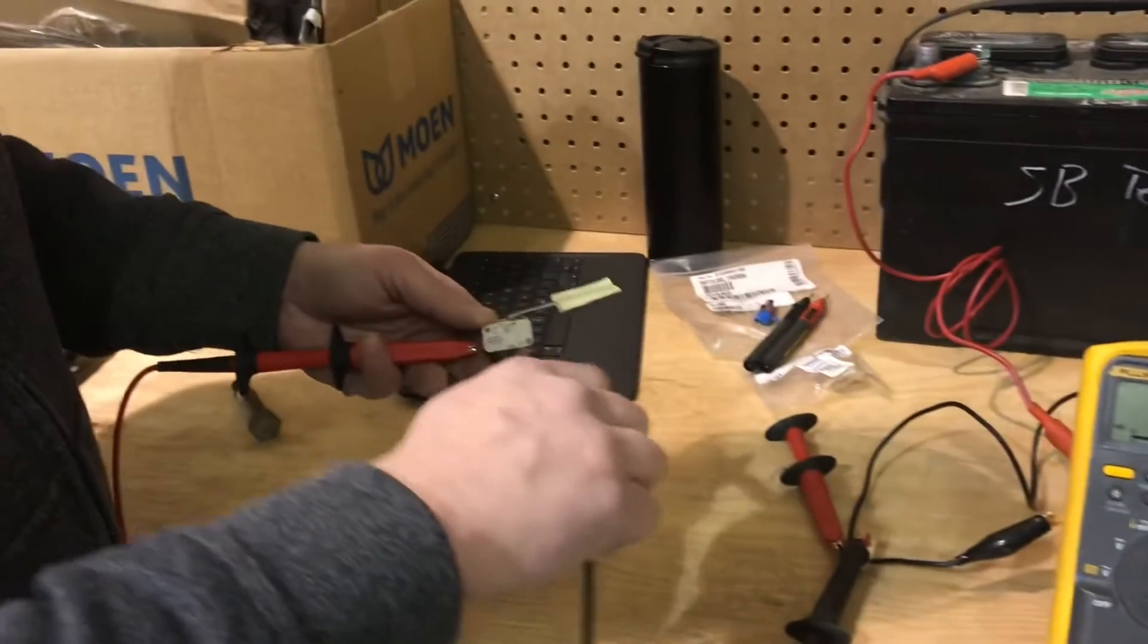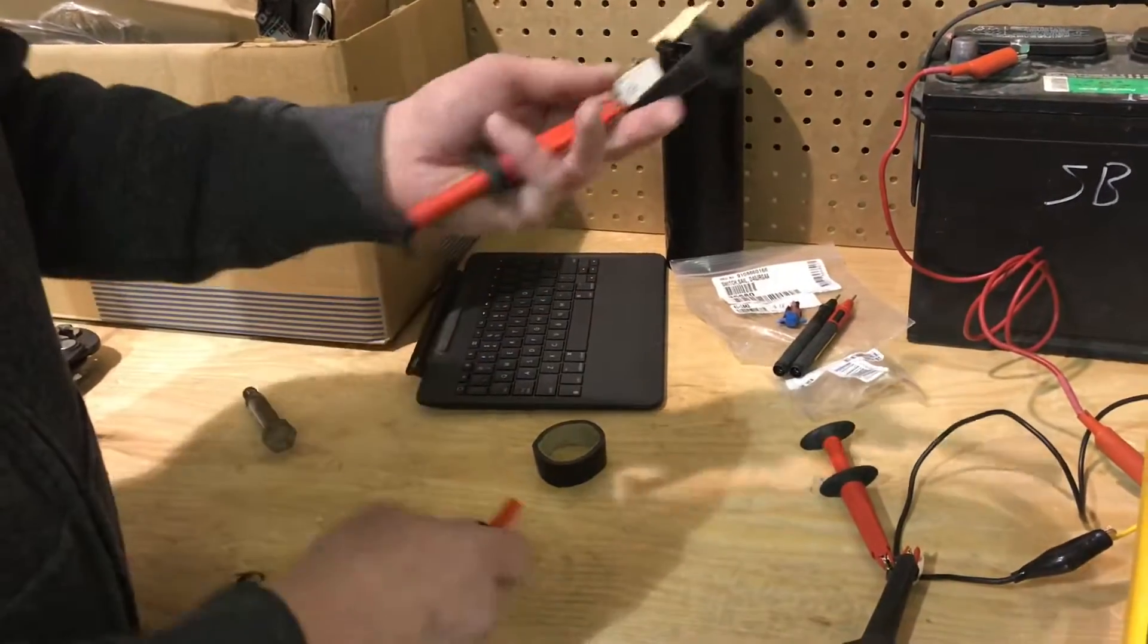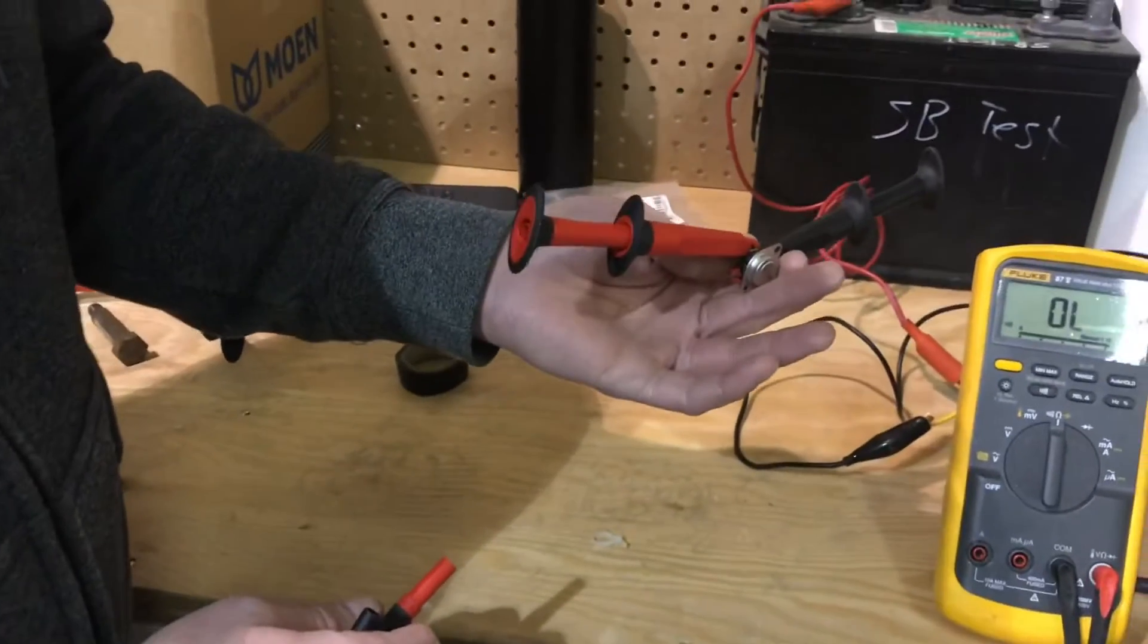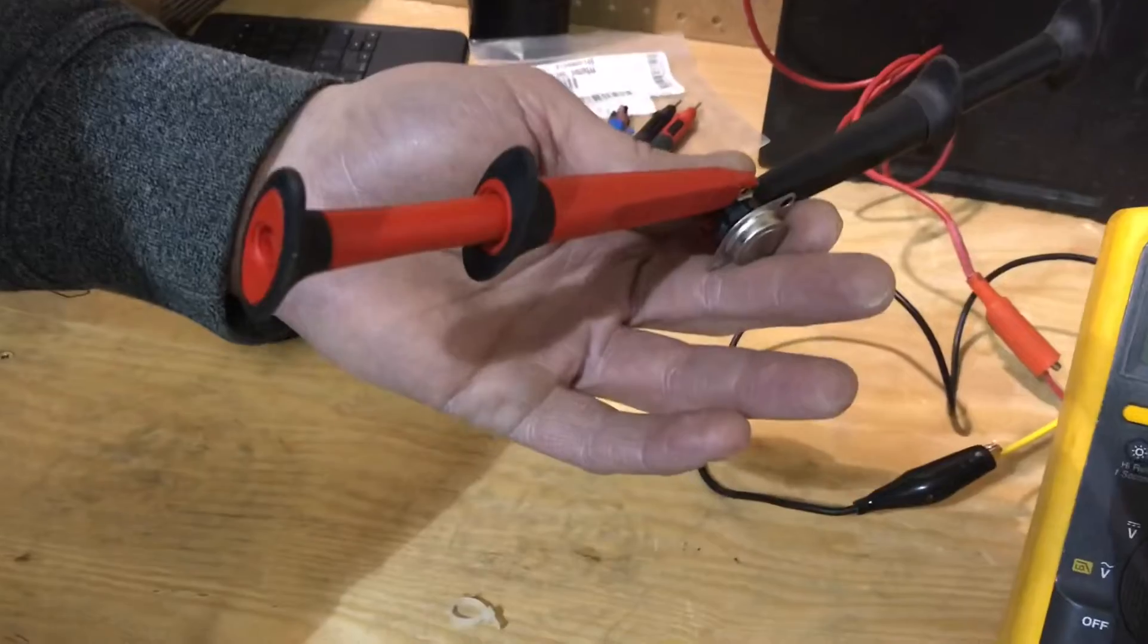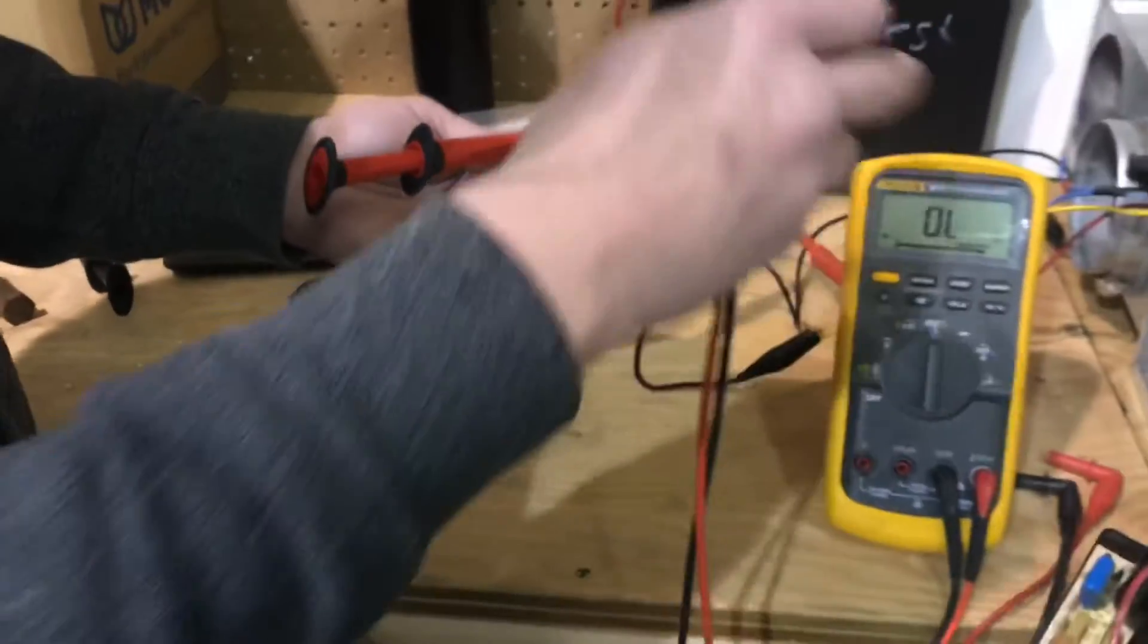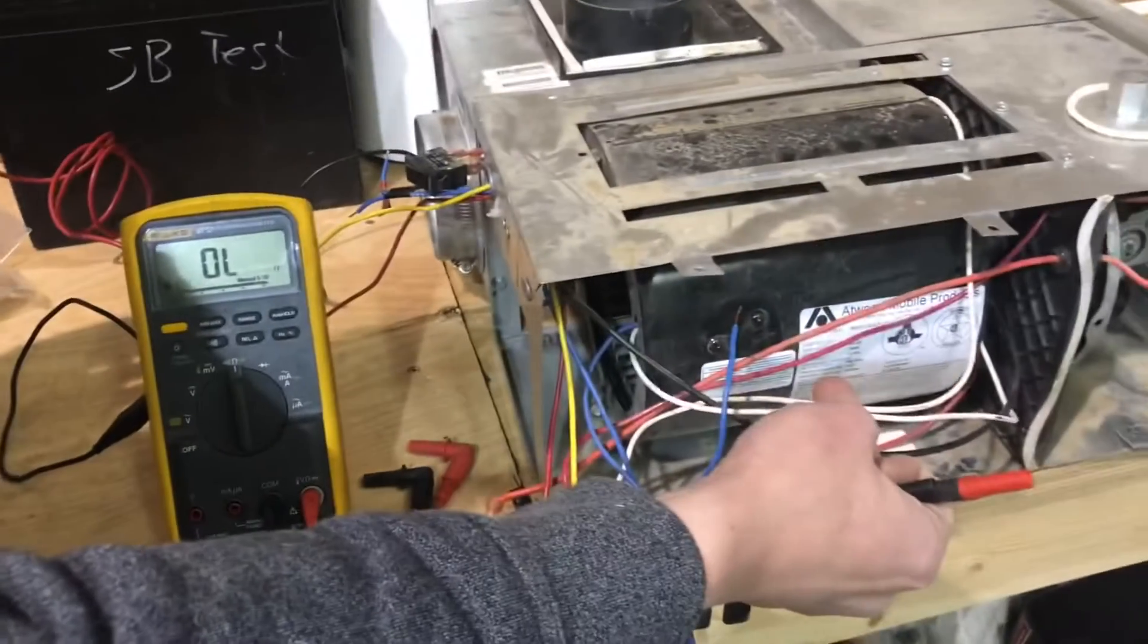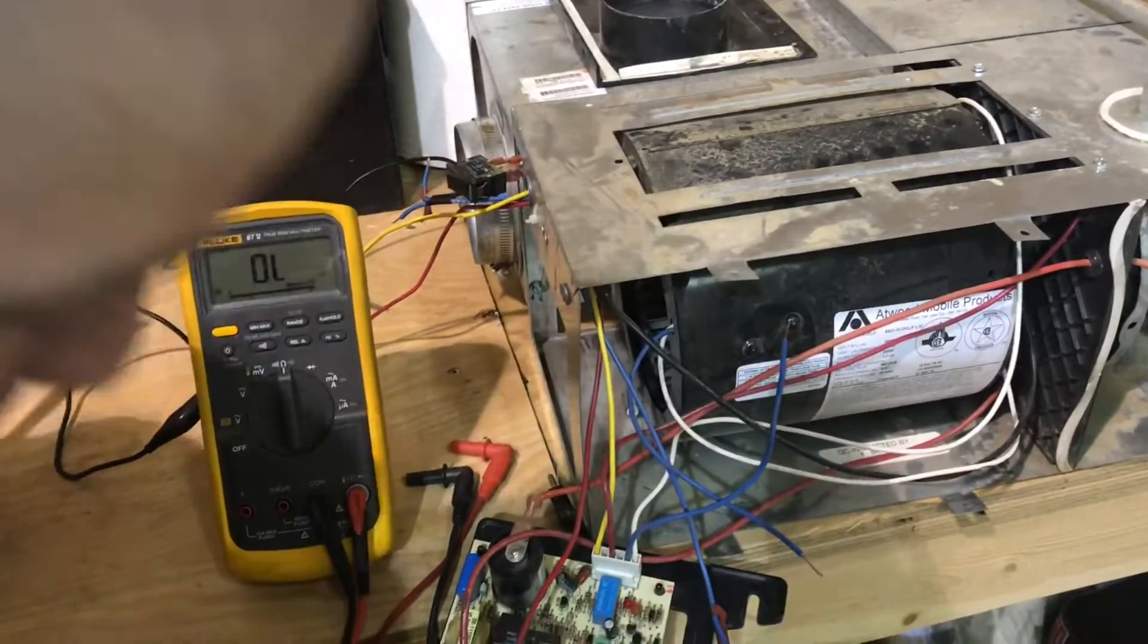Then you're going to come over here to this high limit switch. If you're testing it on the Atwoods, it's way at the back. Testing it, you have to either cut the wires or have these little pokies that can penetrate the wire insulation to test it.